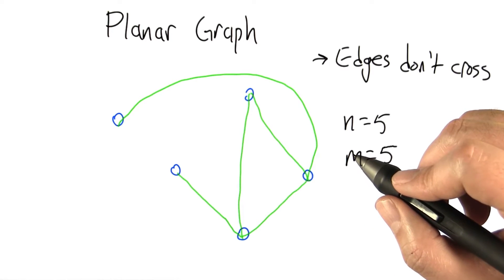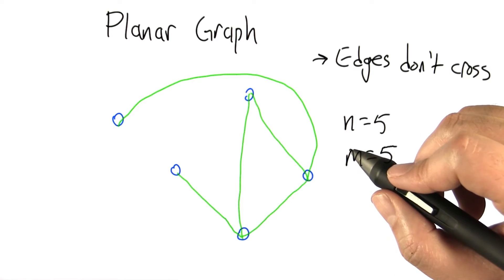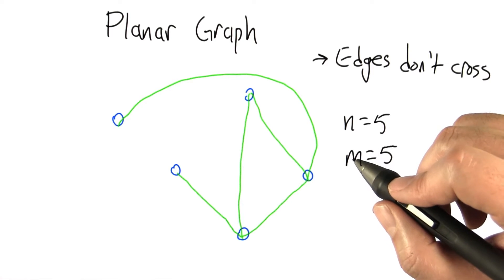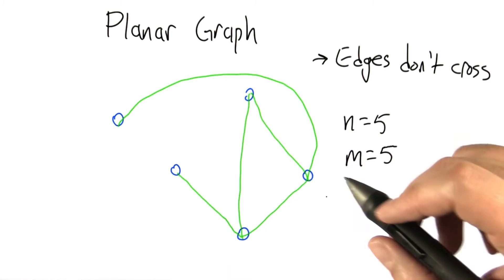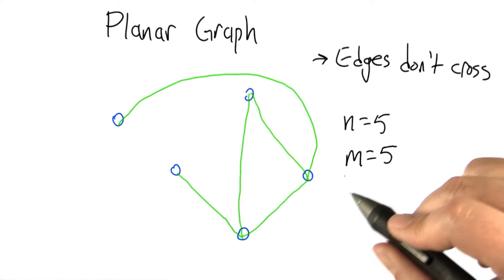Another category of graphs that are very important and come up a lot are planar graphs. These are graphs that can be drawn in the plane on a flat piece of paper so that the edges don't cross.